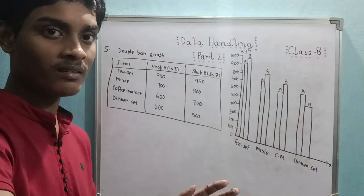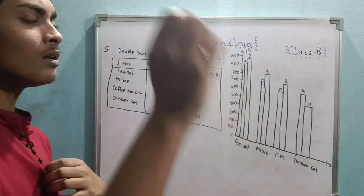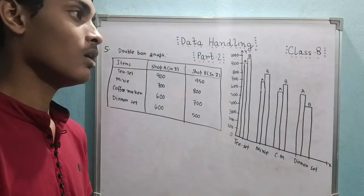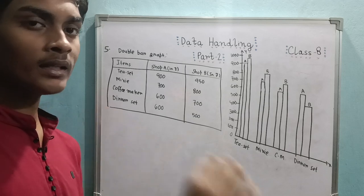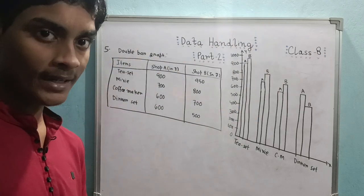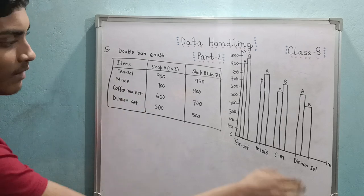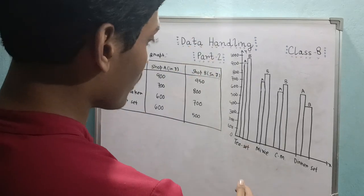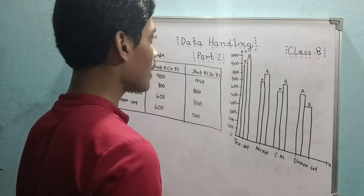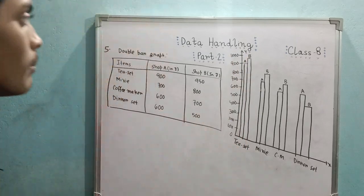Quick recap: Frequency distribution table has data, tally, and frequency columns. Data can be specific numbers or class intervals. Class intervals are ranges of values — upper limit excluded except for the last interval, where both limits are included. Bar graph: x-axis for data, y-axis for frequency. Draw vertical bars up to the required frequency. Double bar graph is the same but involves two frequencies simultaneously for each data point.